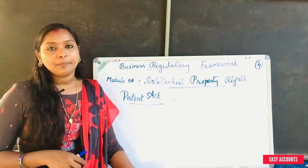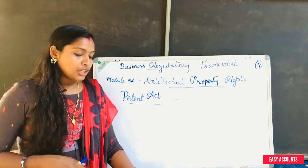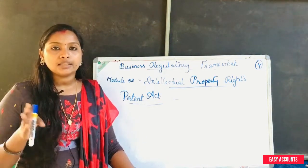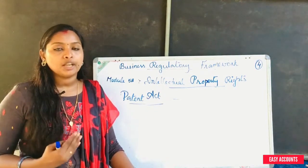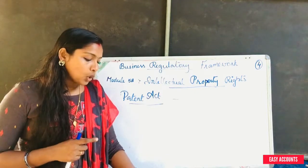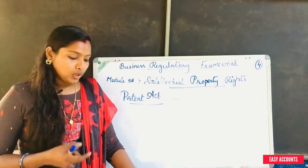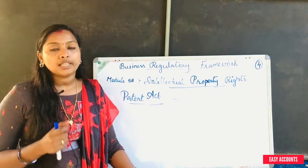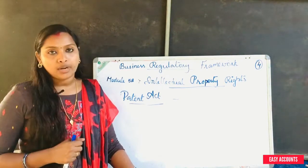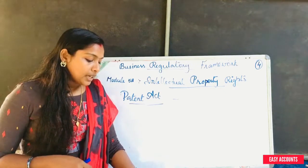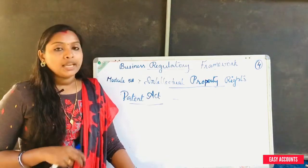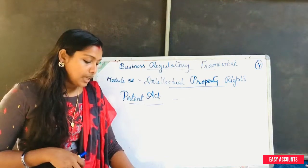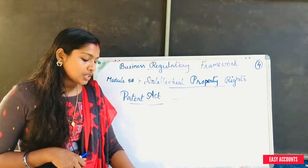That is the grant of patent. The patent is in a prescribed form. Every patent shall be dated as of the date on which the application for the patent was filed. Every patent shall be in the prescribed form and it shall have effect throughout India.